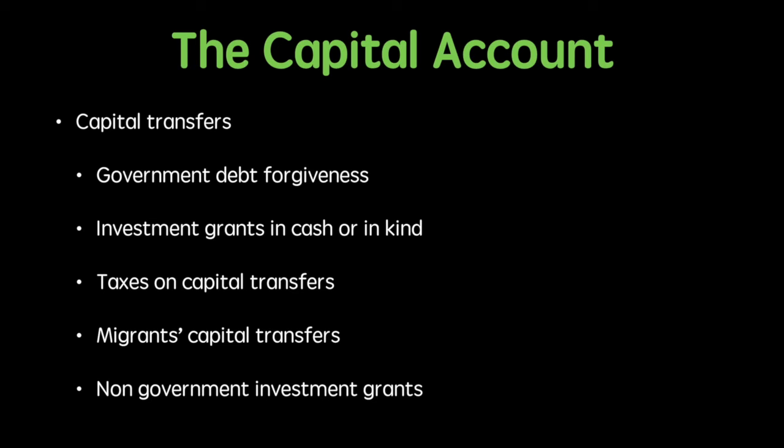It could include cash grants from one economy to another for building infrastructure or schools. This could be done as a donation or gesture of goodwill. Also included on the capital account is the sale or transfer of some intellectual property such as patents or copyrights.